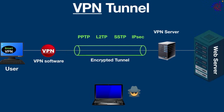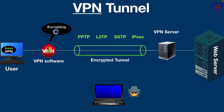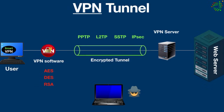In the second step, the user initiates a request — for example, browsing a web page. The VPN software encrypts the request into unreadable code using encryption algorithms such as AES, DES, RSA, and so on. This encryption process can be compared to sending a sealed envelope through the mail: even if a postal worker sees the envelope, the contents remain private unless someone opens it.